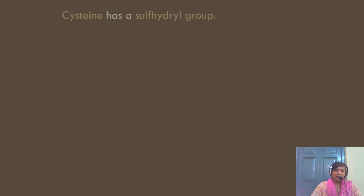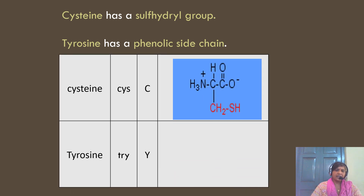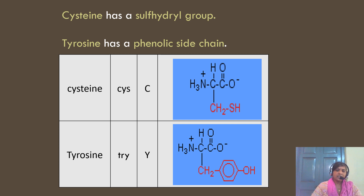Cysteine and tyrosine are the remaining two polar uncharged amino acids. Cysteine has a sulfhydryl group in its side chain and is one of the two sulfur-containing amino acids (the other being methionine). Tyrosine has a hydroxyphenyl alanine structure — it is like phenylalanine but with a hydroxyl group at the fourth position of the benzene ring.